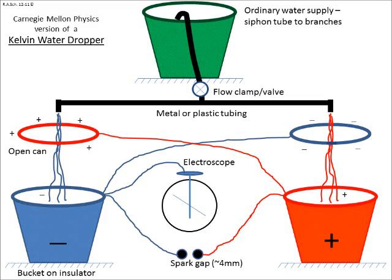Here is a diagram which gives a first explanation of how the device works. Ordinary water comes from the top and is split into two branches that flow on the left and to the right into ordinary buckets. The buckets are cross-connected to cans that are suspended, cans without bottoms, such that the stream of water flows through.